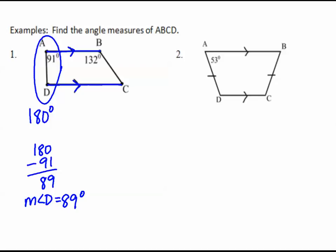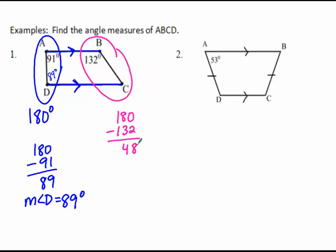Can you find the other missing angle, angle C? These two angles — one from one parallel line, one from the other — have to add up to 180. So 180 minus 132 equals 48. The measure of angle C is 48 degrees. Remember the degree symbol when you write the angle measure.